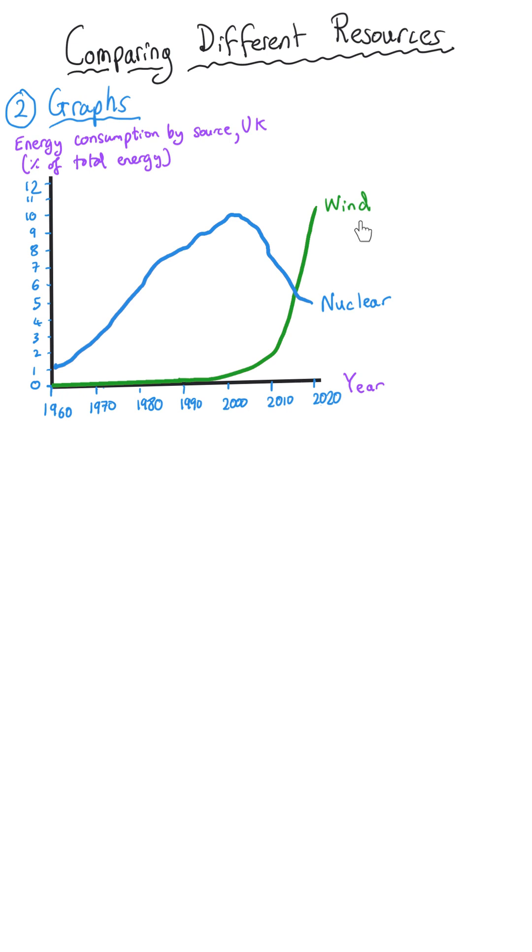Wind and nuclear, and we're covering the percentage of the total energy generated in the UK. And so the question might simply be asked to describe the changes in the percentage of electricity generated in the UK between 1960 and 2020.